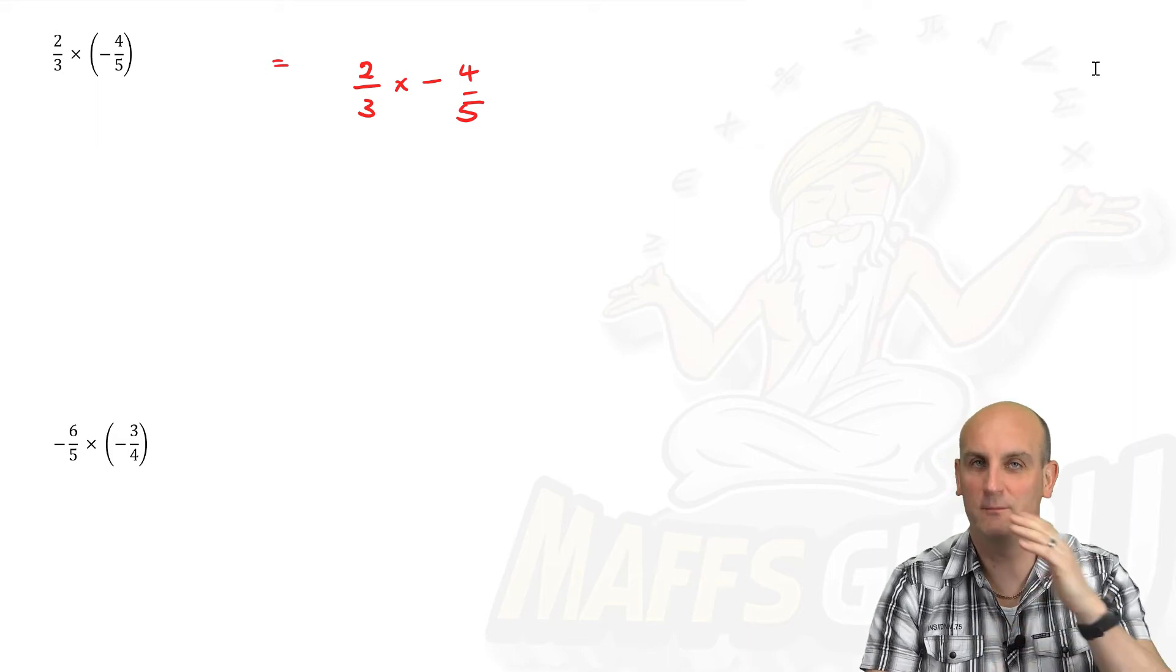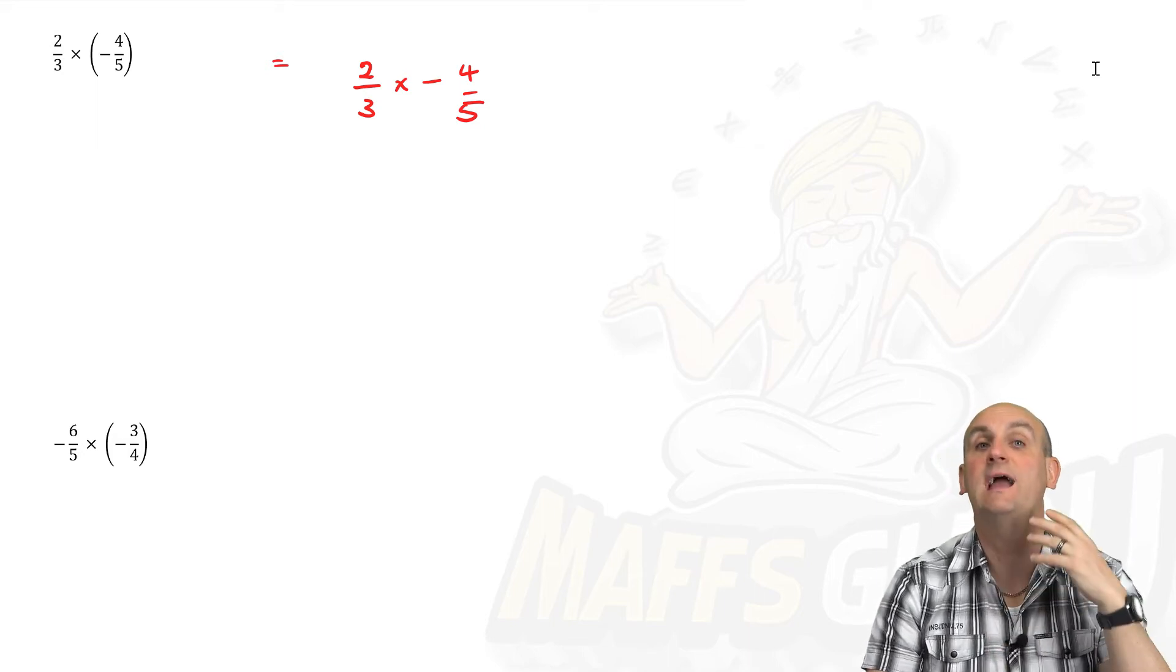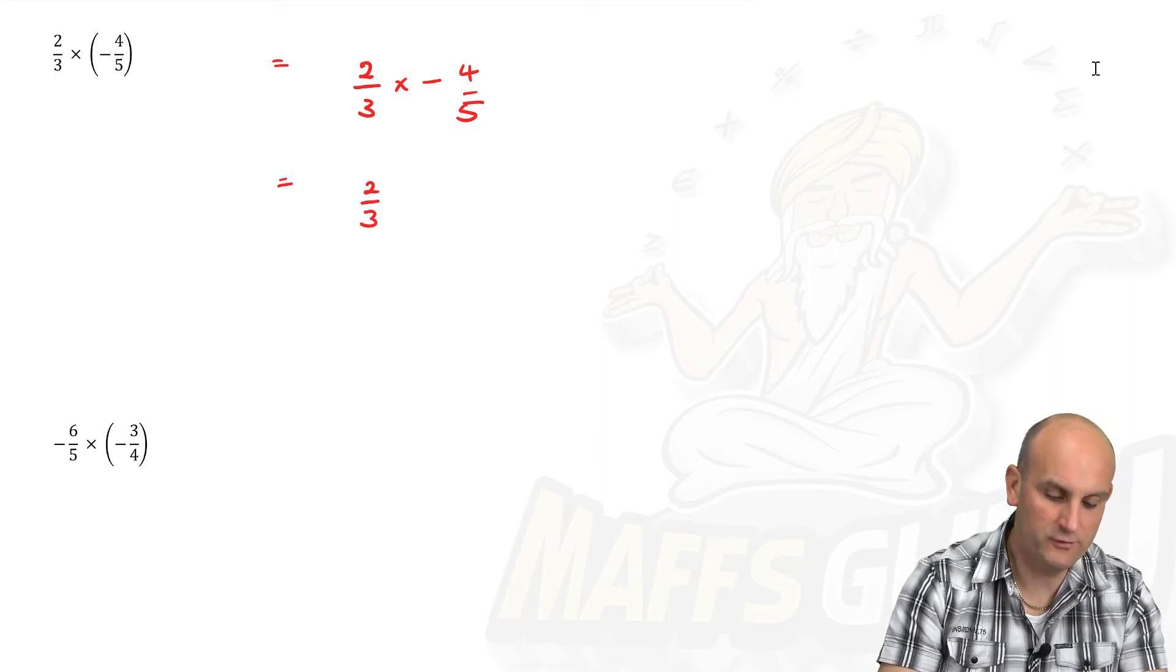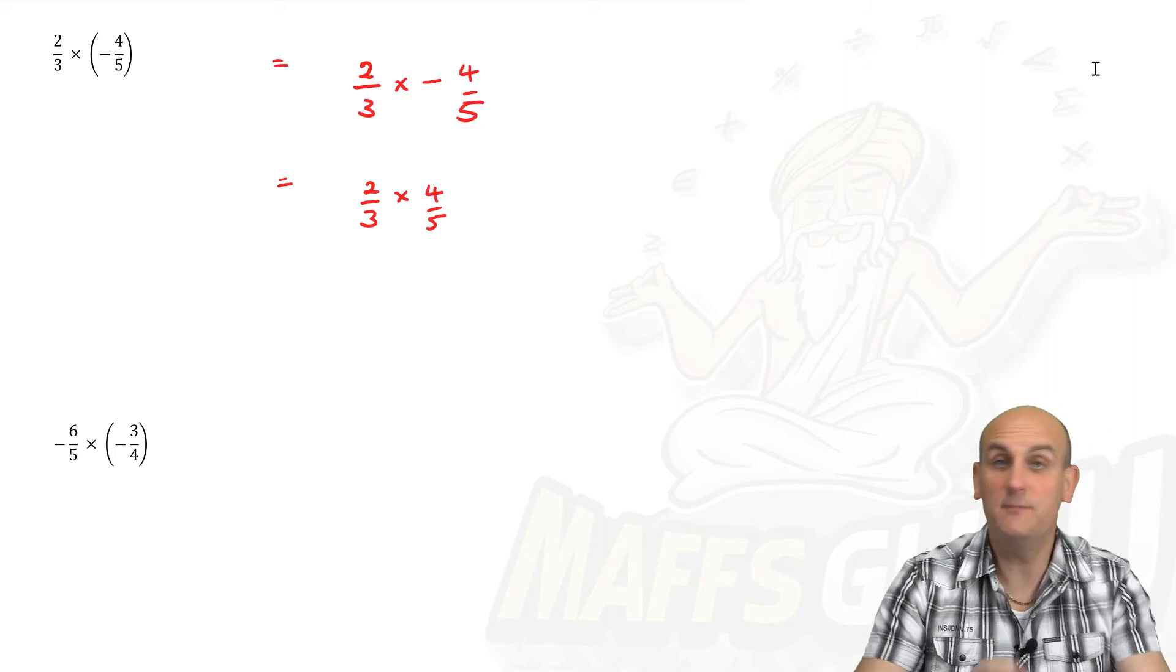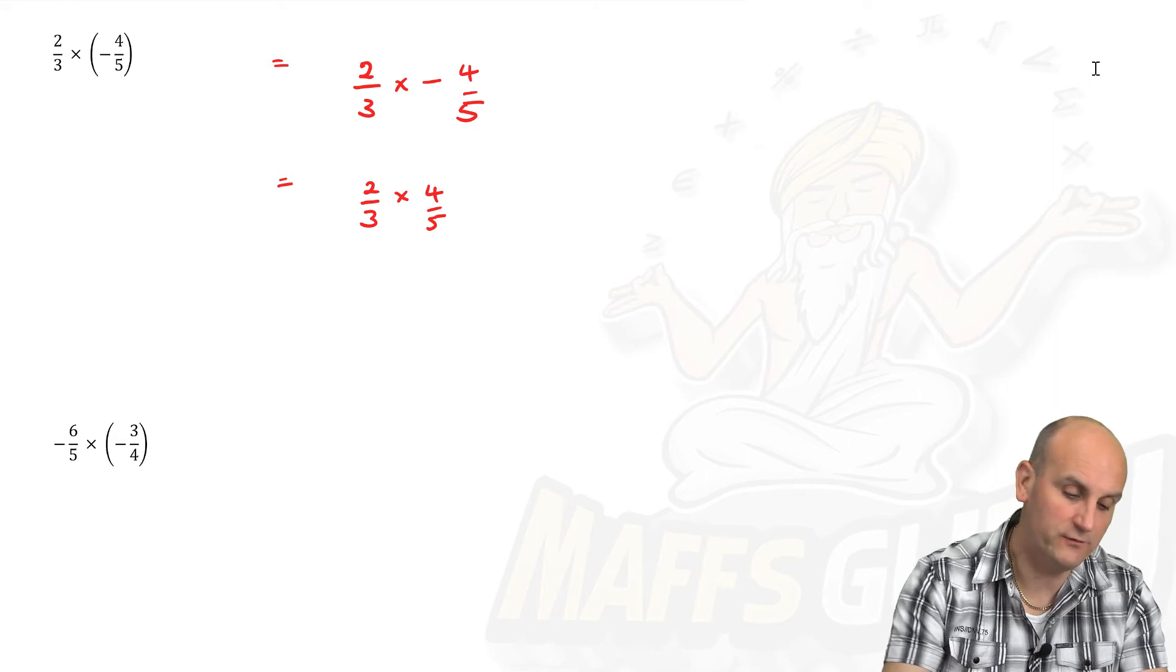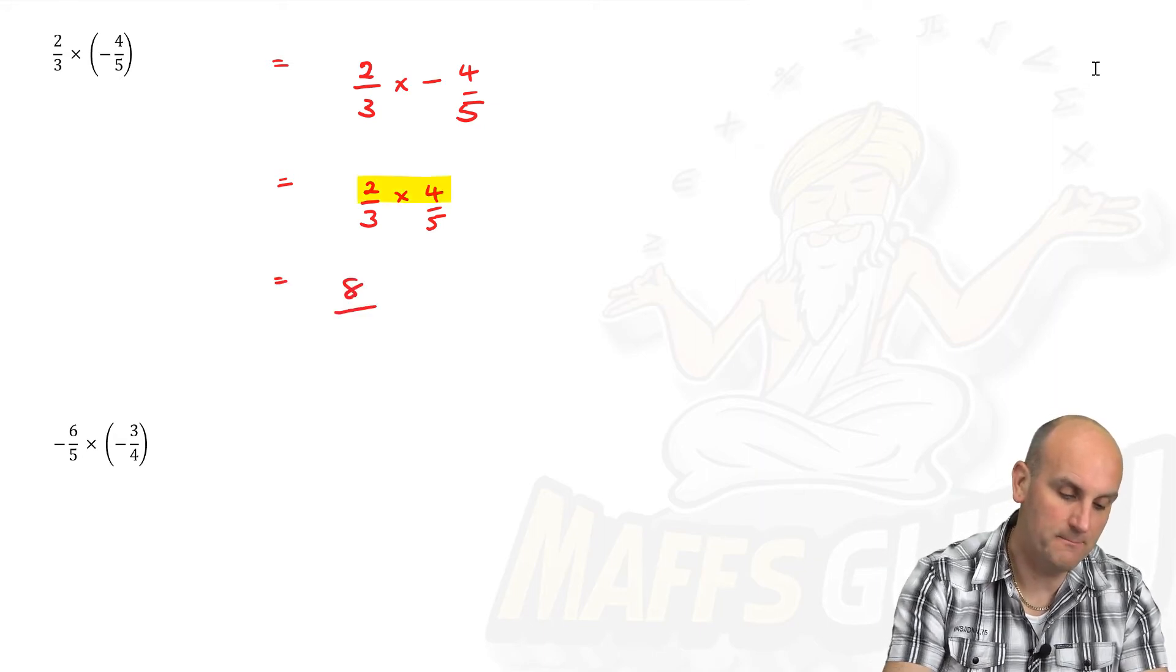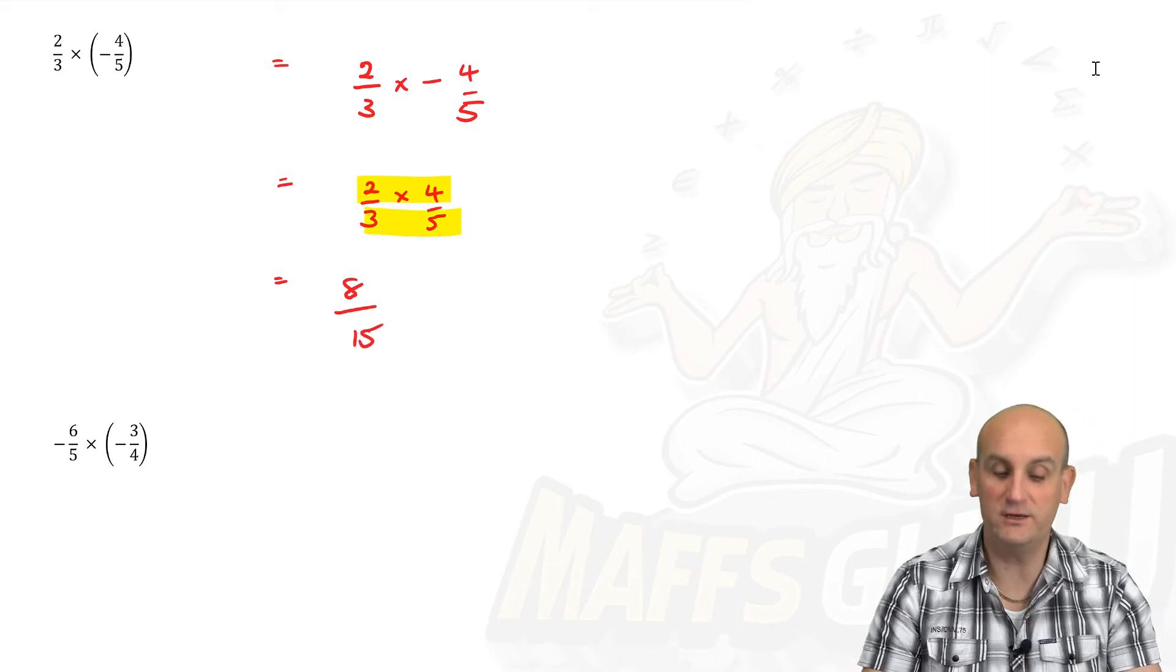So now I've got a multiply or a divide. I can ignore the signs for the moment. Let's just do the fraction work first. Let's just do two thirds times four fifths. We don't need to make the bottoms the same. Multiplication is the easier one. So if you remember, we do the top two multiply together, which gives me eight. And the bottom two multiply together, which gives me 15.